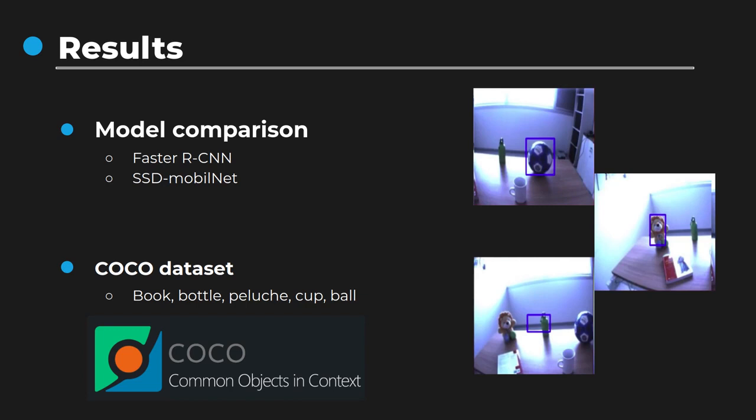We chose to test our framework with 5 objects already present in the COCO dataset to compare the performances of the network before and after retraining. We chose three medium-sized objects — the ball, the plush toy, and the book — and more challenging objects: the bottle and the cup. As you can see from samples of the training set, our approach worked well for large objects like the ball or the plush toy, but produced poor data points for small objects with too much background, like the bottle.